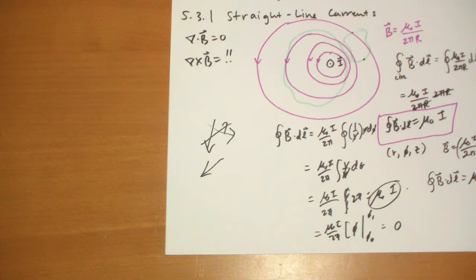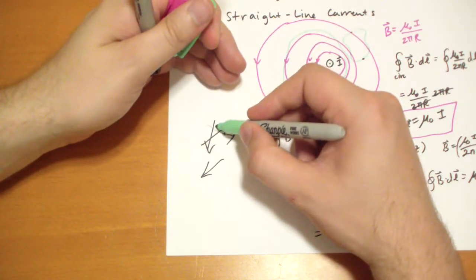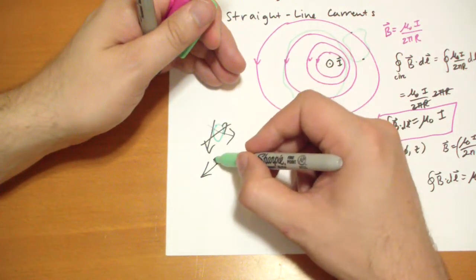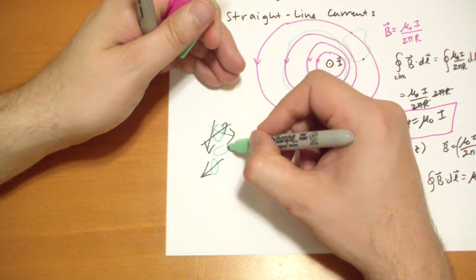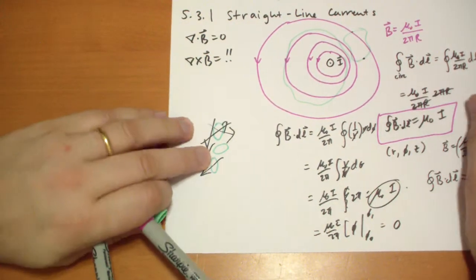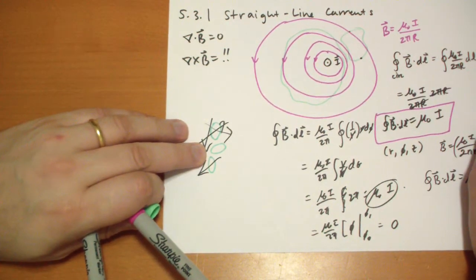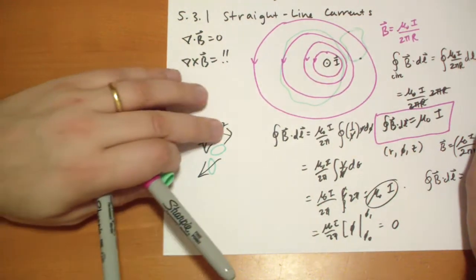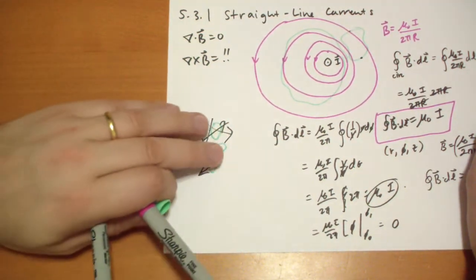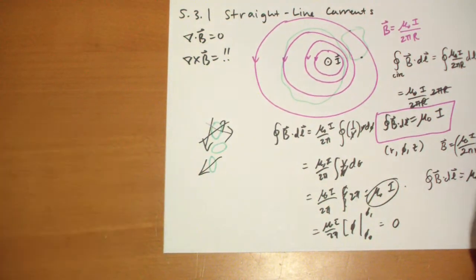And if you draw any loop that encloses any of these currents, like this one would have an integral B dot DL of zero. This one would be the total of the currents going through once for this one, once for that one. And this one was the same way only for that one.